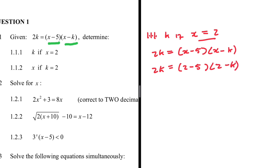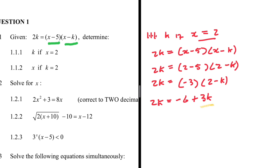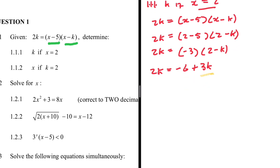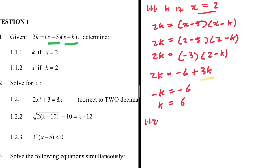This gives us 2k = -3 multiplied by (2 - k), which expands to 2k = -6 + 3k. Taking 3k to the left-hand side: 2k - 3k = -6, so -k = -6, meaning k = 6. That is 1.1.1.